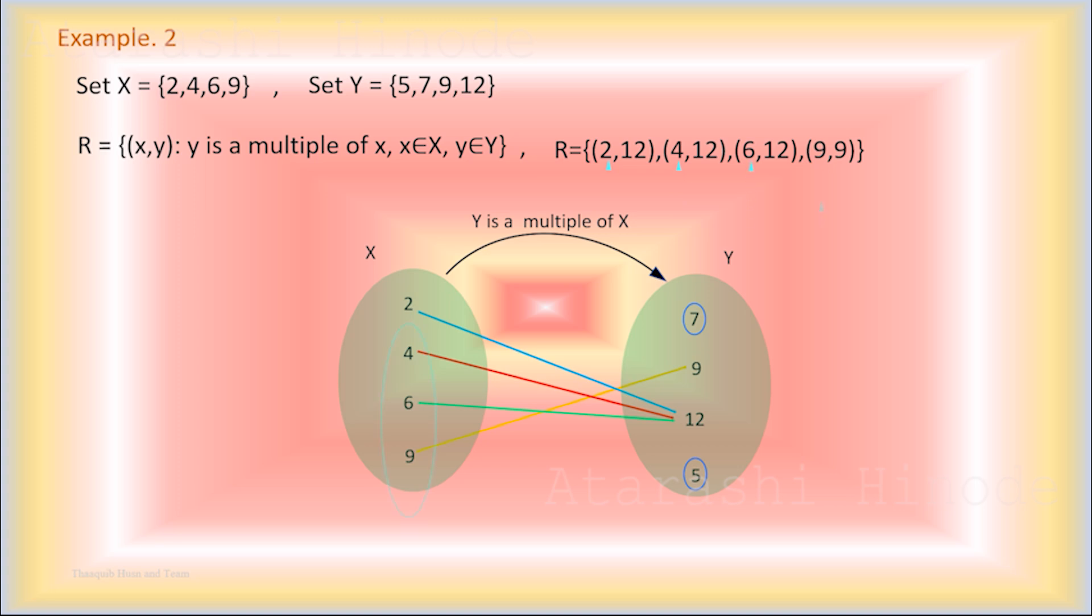The domain set is {2, 4, 6, 9} and the range set is {9, 12}. Since the condition to be a function is satisfied here, we can say that this relation is a function.